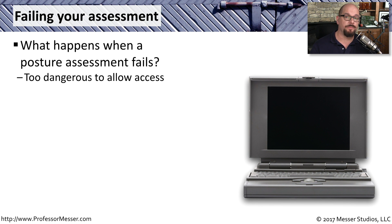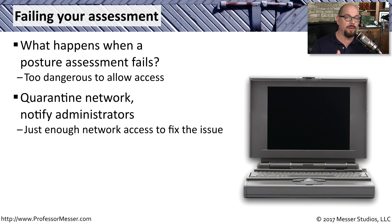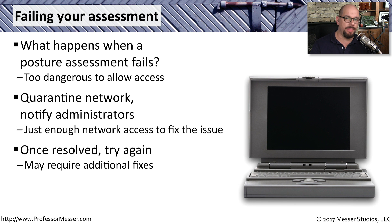If you're authenticating to the network but one of the components within your system doesn't meet the minimum requirements set by the security team, and you fail the posture assessment, your system has been designated as too dangerous to let onto the network. You will probably be presented with a series of messages that explain what parts of the health check did not pass, and you're usually put onto a quarantine network that doesn't allow you access to the inside of the network, but gives you enough access to download and install all of the different components you need. Once you've made those changes, you can re-authenticate to the network and run through another posture assessment. If everything matches, you are then allowed access to the network.